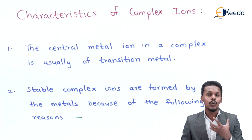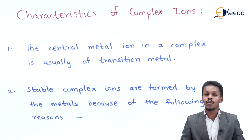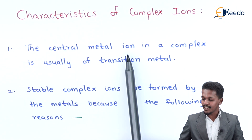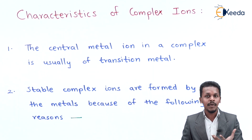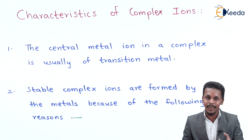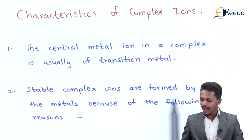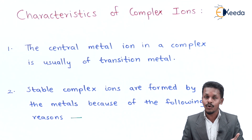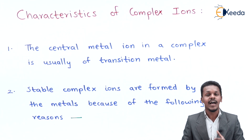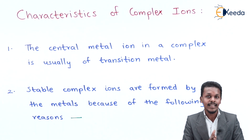In this topic let me talk about the most important points related to the characteristics of the complex ions. The central metal ion in a complex is usually a transition metal. The reason behind that is the transition metal has variable oxidation state, and that's the reason it has a tendency to form a stable complex.